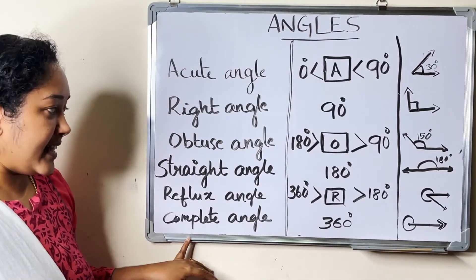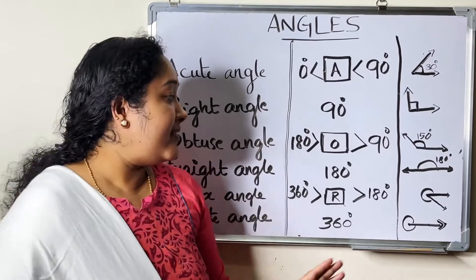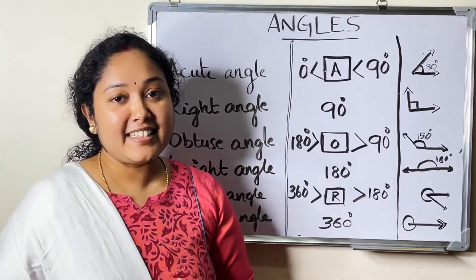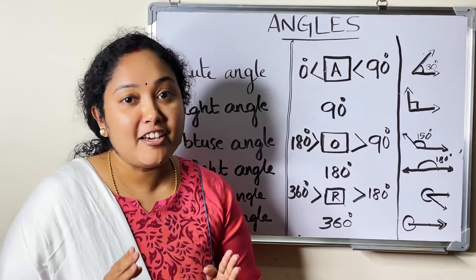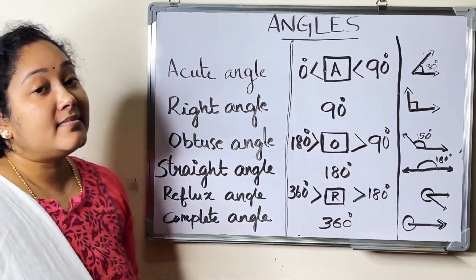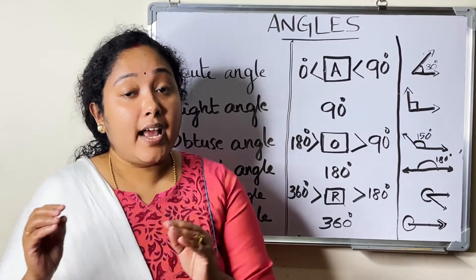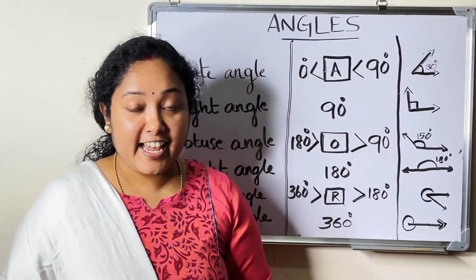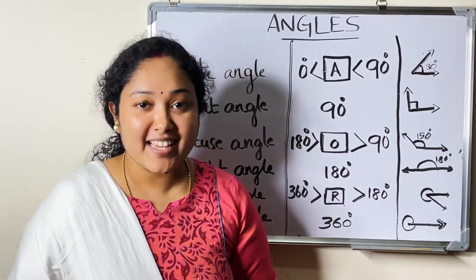Reflex angle: an angle greater than 180 degrees and less than 360 degrees is called a reflex angle. Complete angle: an angle around a point is 360 degrees and it is called a complete angle.